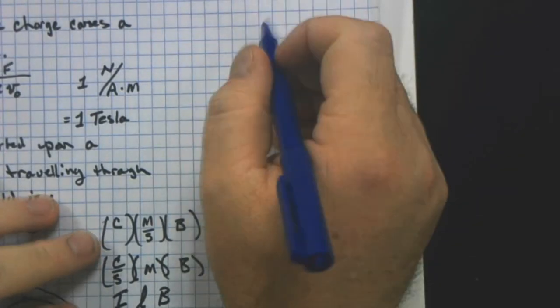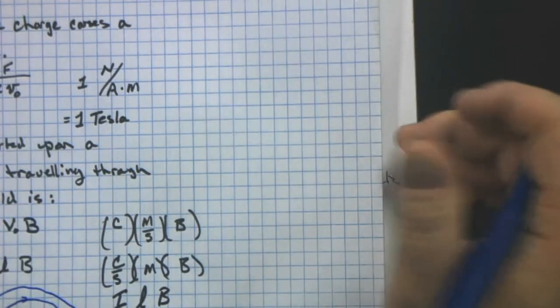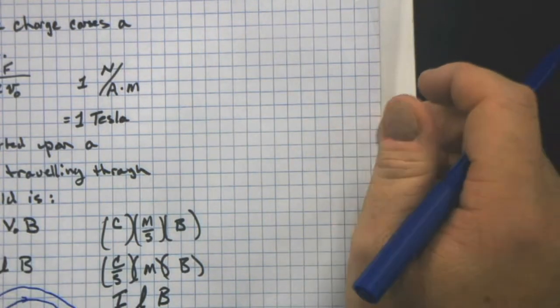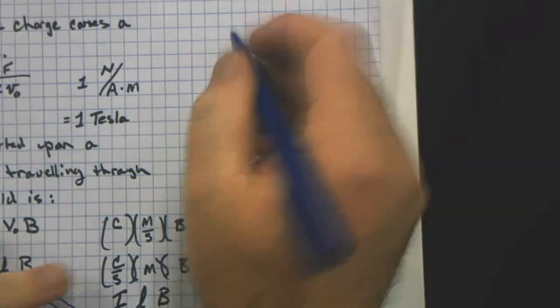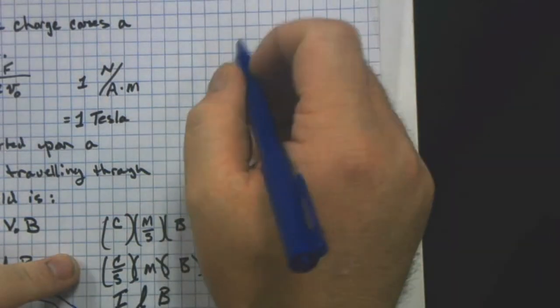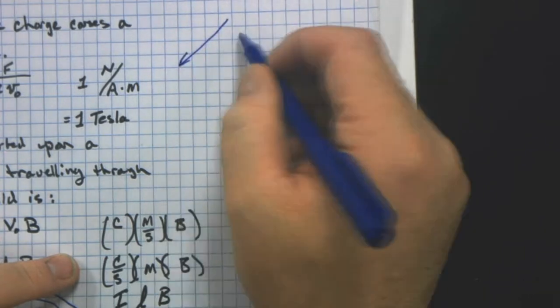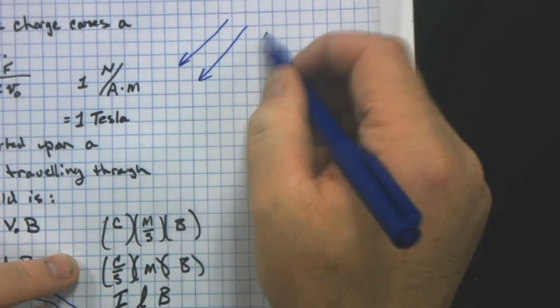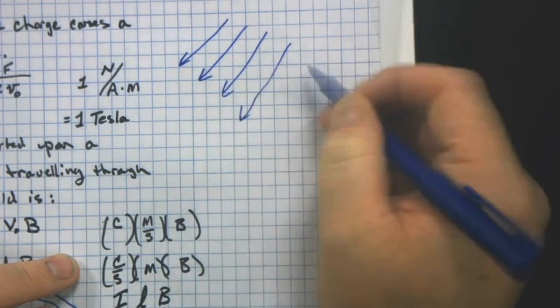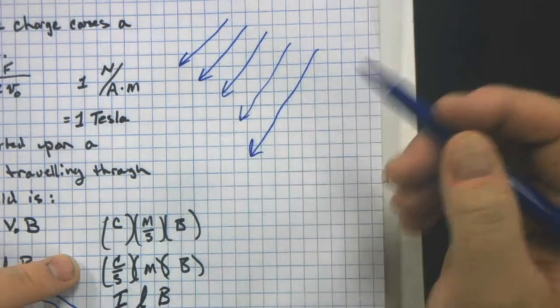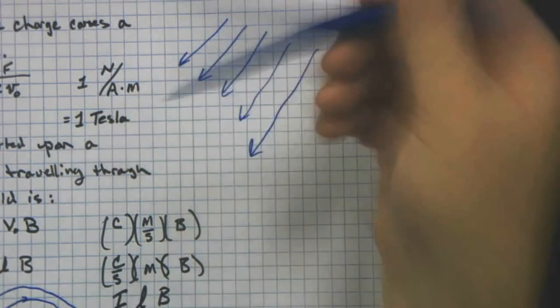We have to think in three dimensions here, which is kind of cool because we live in three dimensions. Let's say that we have a magnetic field coming this way, kind of out of the page, coming at us out like that.